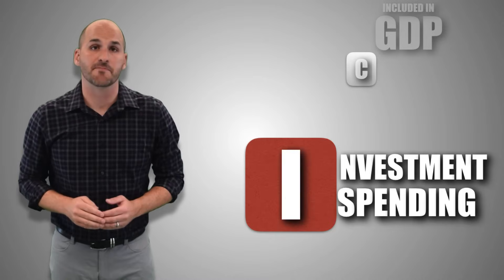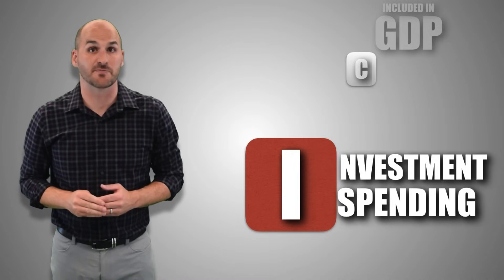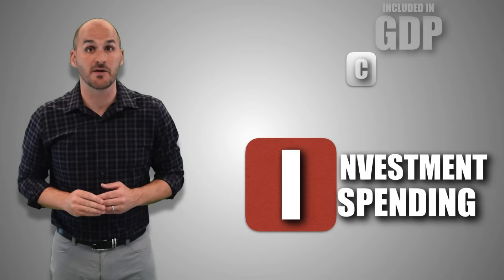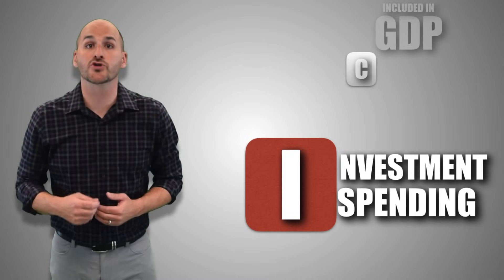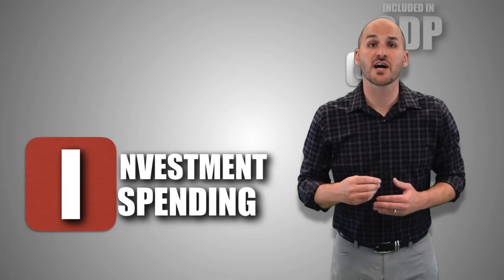GDP also includes investment spending, which pertains to firms — not financial investments, since nothing is being produced there. Investment spending is defined as aggregate expenditures by firms on themselves to increase future productivity or profitability. Firms will take out loans and reinvest by building new factories, innovating new technology, hiring new workers, or restocking inventories. For example, Starbucks recently renovated locations to include drive-throughs, and McDonald's installed play places to attract more customers — every time a firm reinvests in itself, it produces more goods and services that count in the GDP.